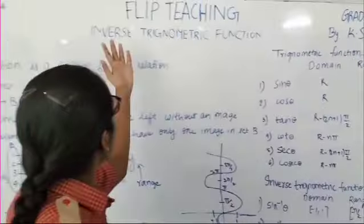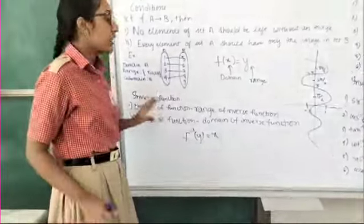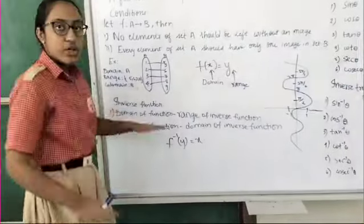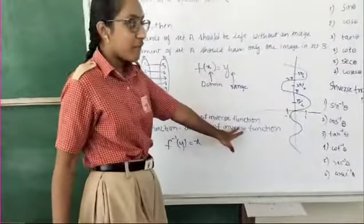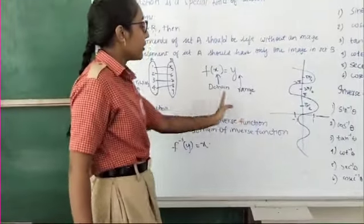Let us talk about inverse trigonometric functions. An inverse function is one where the domain of the original function becomes the range of the inverse function, and the range of the original function becomes the domain of the inverse function.